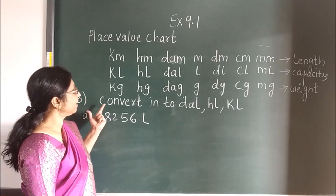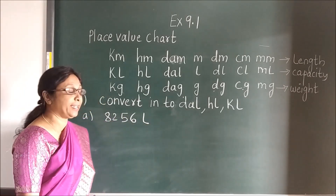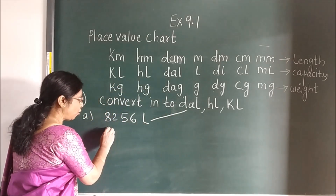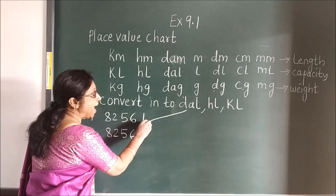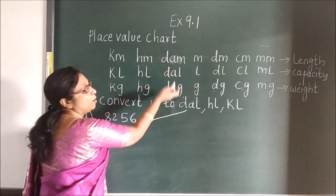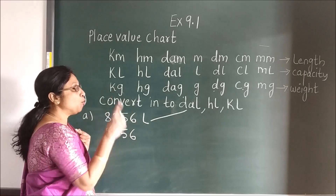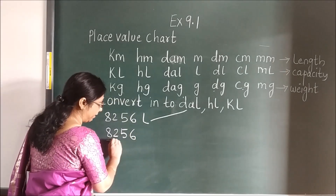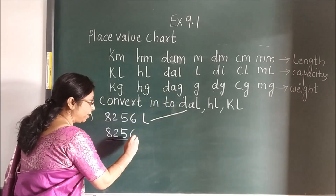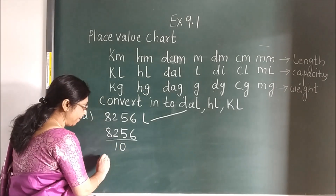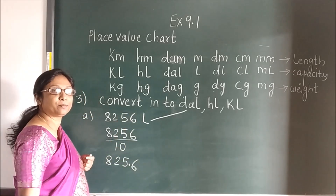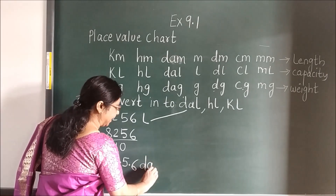Now same here. We will see the convert into DAL, HL, and KL — again the same steps we are going to follow. First you will convert this. So 8, 2, 5, 6 — L to DAL. Where is L, children? See here where we are moving: L to DAL — we are moving left. When we move left, what do you have to do, children? You will divide. How many times are you going to divide? 1. So divide by 10. Now you will write the number — 1, 0 — so after that, place the point. In this way you can convert to DAL.